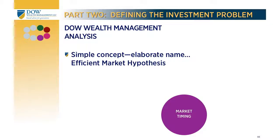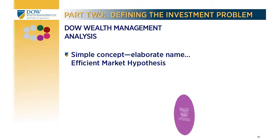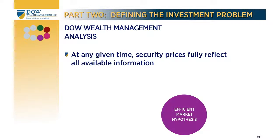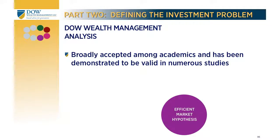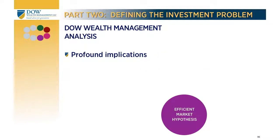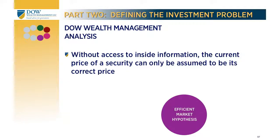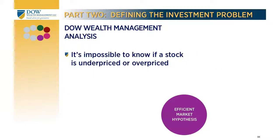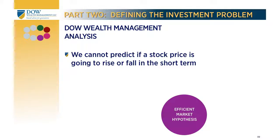These are the people who make their living telling others what the markets will do next — which sectors will do well and which won't. Unfortunately, nobody has such a talent. Here is a simple concept with an elaborate name: the efficient market hypothesis. The efficient market hypothesis states that at any given time, security prices fully reflect all available information. Without access to inside information, the current price of a security can only be assumed to be its correct price. It's impossible to know if a stock is underpriced or overpriced; therefore, we cannot predict if a stock price is going to rise or fall in the short term.